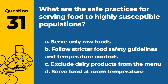Question 31. What are the safe practices for serving food to highly susceptible populations? A. Serve only raw foods. B. Follow stricter food safety guidelines and temperature controls. C. Exclude dairy products from the menu. D. Serve food at room temperature. Answer: B. Follow stricter food safety guidelines and temperature controls. Serving food to highly susceptible populations, such as the elderly, young children, or immunocompromised individuals, requires following stricter food safety guidelines and temperature controls to minimize the risk of foodborne illness.